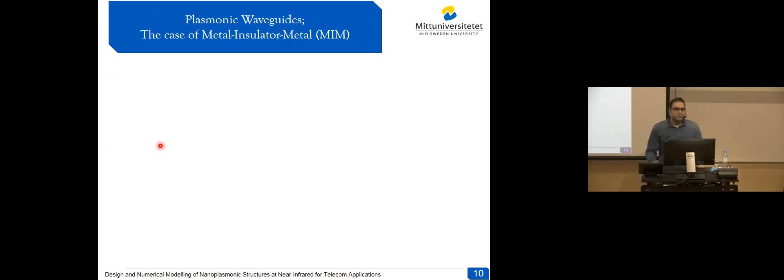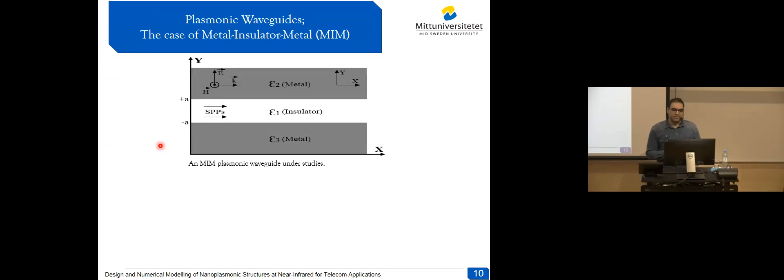Generally speaking, there are two types of plasmonic waveguides: metal-insulator-metal, MIM, or insulator-metal-insulator, IMI. However, for integrated circuits, the MIM waveguide is the favorite choice because it offers significantly higher field concentration, despite having higher losses. In our multi-layer waveguide, the top layer is metal like silver, the middle layer is insulator such as air, and the third layer is also silver for symmetry.